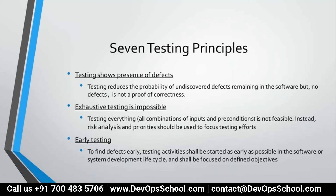Third principle: early testing. If you find defects as soon as possible in the application lifecycle or software development lifecycle or infrastructure lifecycle, it is very easy to resolve those issues. For example, if you are constructing a house and find a fault in the design at the primary level itself, you can save a lot of money and proceed correctly.